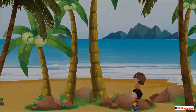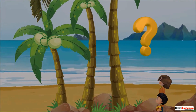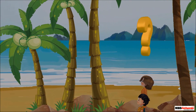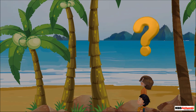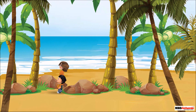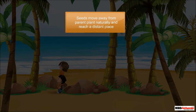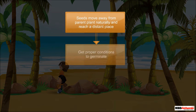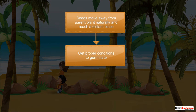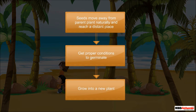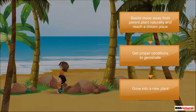Do you wonder who sowed the seeds of coconut plants at such an isolated place? You will be amazed to know that not always are the seeds sown by people. Many a time, seeds move away from the parent plant naturally, reach a distant place, get the proper conditions to germinate, and then grow into a new plant. This is how so many coconut plants have grown on the island where Sid is visiting.